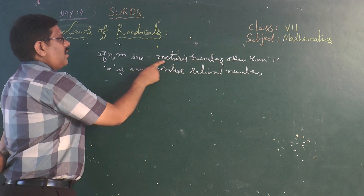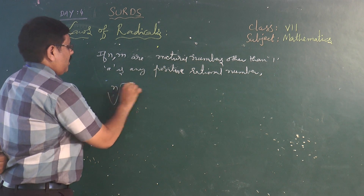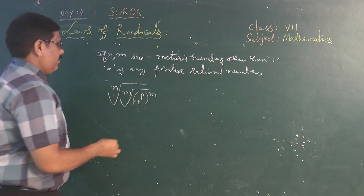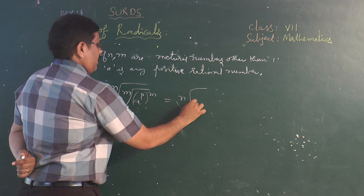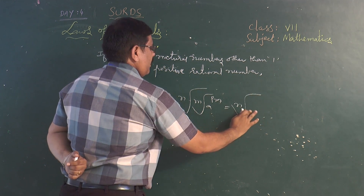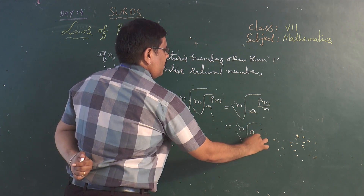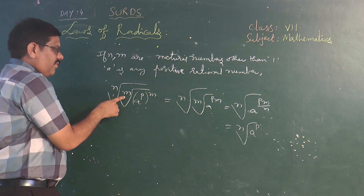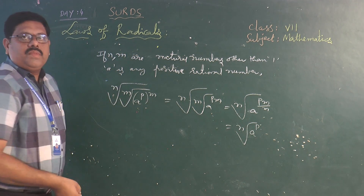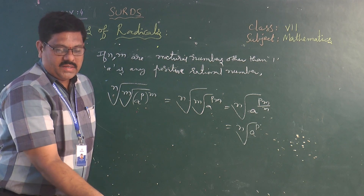If n and m are natural numbers other than 1 and a is any positive number, then nth root of (mth root of a^p) whole to the power m equals nth root of a to the power of pm/m, which simplifies to nth root of a^p. So whenever you have nth root of (mth root of a^p) whole power m, that can simply be written as nth root of a^p. We will now see a few problems based on these laws.